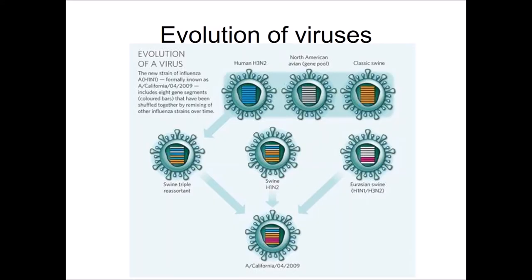The H1N1 strain of influenza — the 2009 one that wreaked havoc and closed down some college campuses — came about from shuffling viruses from multiple sources: a human version of influenza, an avian version, a swine version, and then additional reassortment with different swine versions of influenza to make this H1N1 form.